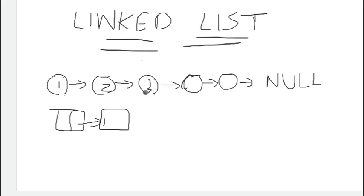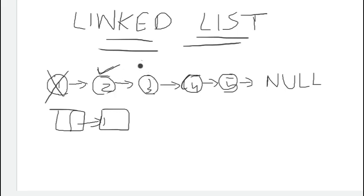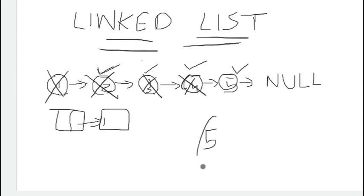We have to delete a node if its right value is bigger. For example, we delete the first node, then came to the second — there are no other nodes — then check its right value which is 3 and delete 2. Do the same for all nodes and at the end we have 5 and null.